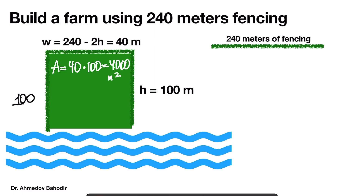Previously it was 6400 square meters. So depending on how we choose the dimensions of this rectangular field, the area is going to be different while the sum of the sides remains the same. We would like to figure out the dimensions in order to maximize this area. The area is equal to the width times the height, and we have to maximize this.